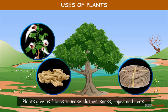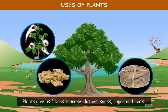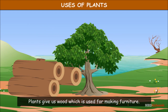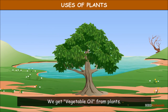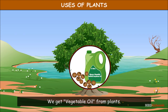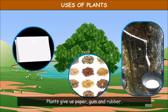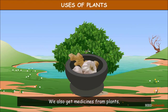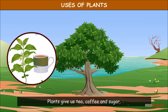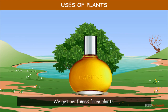Plants give us fibers to make clothes, sacks, ropes, and mats. Plants give us wood, which is used for making furniture. We get vegetable oil from plants. Plants also give us paper, gum, and rubber. We also get medicines, tea, coffee, sugar, and perfumes from plants.